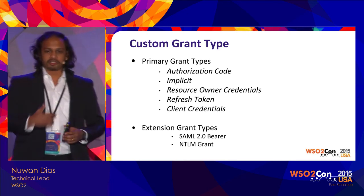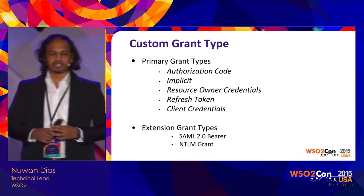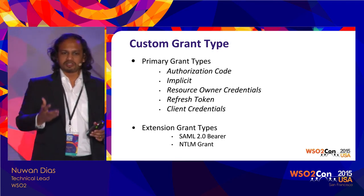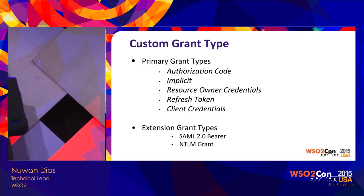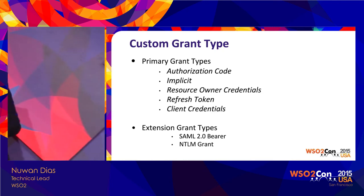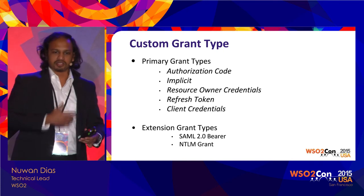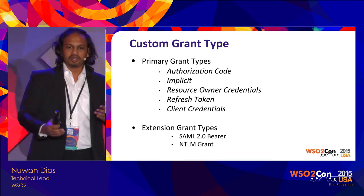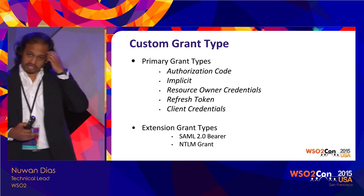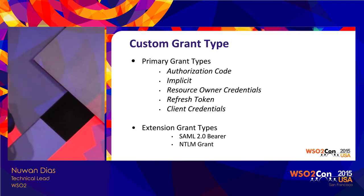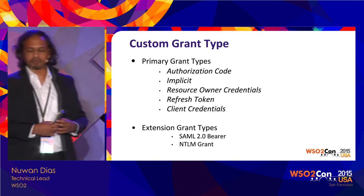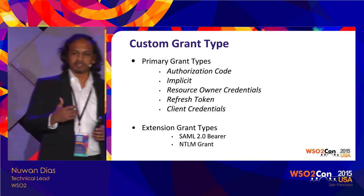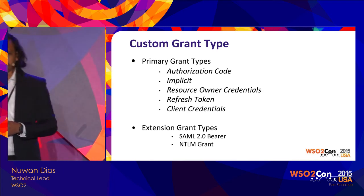When dealing with access tokens, depending on the nature of the applications you use and how much control you have over their security, the way you get access tokens differs. For trusted applications, you would provide user credentials to the application and exchange them for an access token. In certain cases you would use the application credentials to get an access token. You might also have a case where you want to implement a custom grant type.